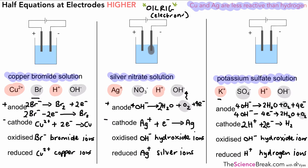That's quite a tricky topic. To summarize: in the first example we had bromine gas at the positive electrode and copper metal at the negative electrode. For the second, silver metal at the negative electrode and oxygen gas at the positive electrode. For the last example, gases were produced at both electrodes. This was half equations for the higher tier — quite challenging, but hopefully it made sense. You might need to go over it once or twice and watch the previous videos, but if you think carefully about it you'll be fine. Thank you for watching and I'll see you soon.